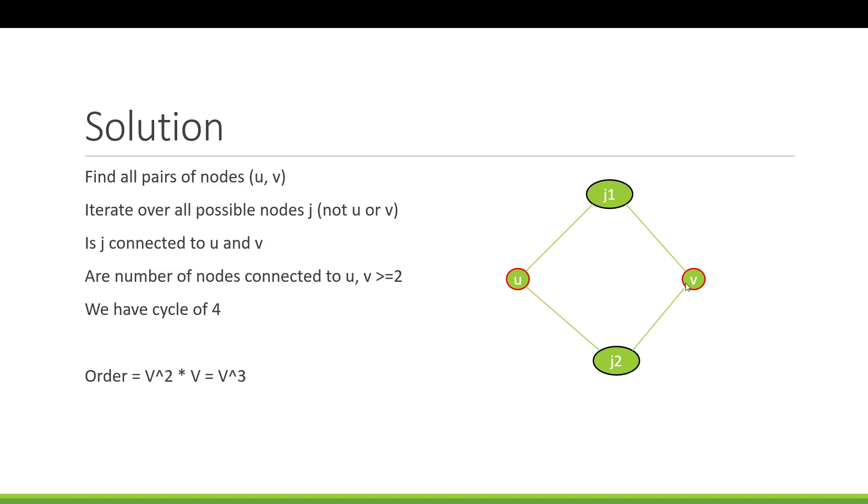And the complexity of this is, obviously, we found every pair, so the complexity was V squared. And then we went through every vertex to find if we had two or more vertices that connected with our pair. And so we iterate over all this and we'll get V cubed.